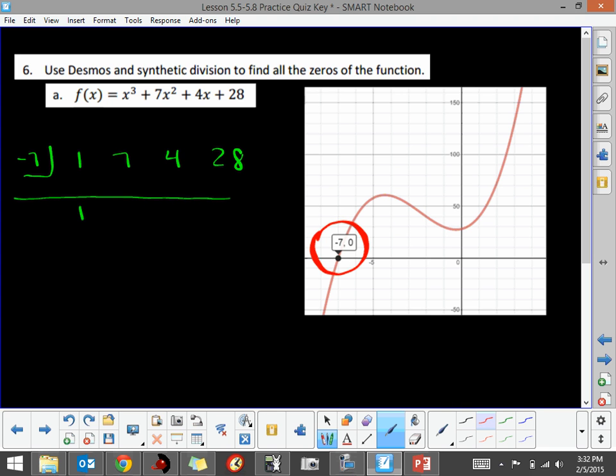So I'm going to drop down the 1, and 1 times negative 7 is negative 7. Negative 7 and 7 is 0. Negative 7 times 0 is 0, plus 0 is 4. Negative 7 times 4 is negative 28. We get a remainder of 0.